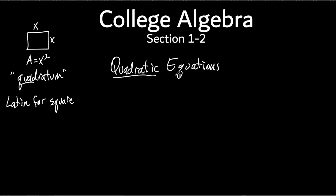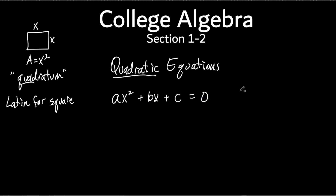Enough Latin. We're not here to learn Latin. We're here to learn about quadratic equations. That's what we're doing today. So let me write down what the general formula for a quadratic equation is. Everybody writing this down? It's important. The quadratic equation means this: it's ax squared plus bx plus c equals zero.